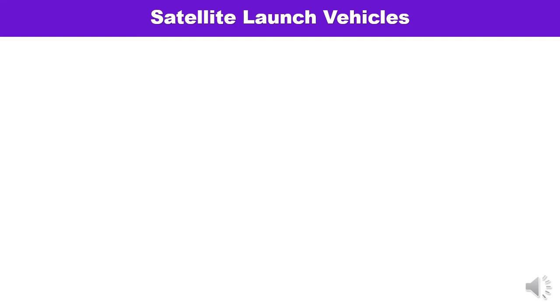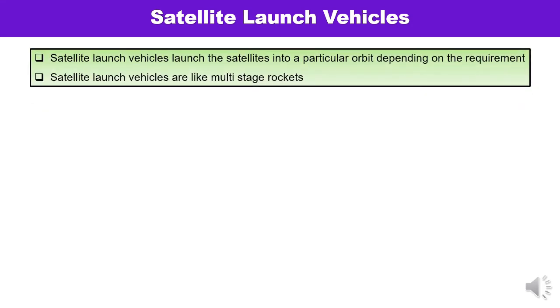Now let us discuss satellite launch vehicles. The selection of launch vehicles and its cost totally depends on the payload — that is the load carried by the spacecraft — and also on the orbit in which the satellite is to be placed. For example, the cost of a geostationary communication satellite is very high compared to other low-altitude satellites. Satellite launch vehicles launch the satellite into a particular orbit depending upon the requirement and purpose for which the satellite is to be launched.